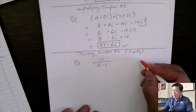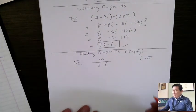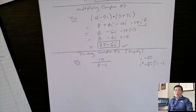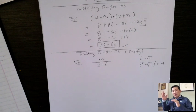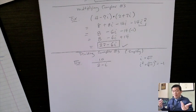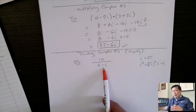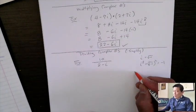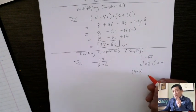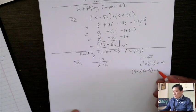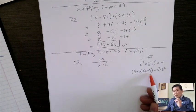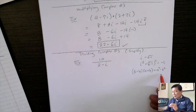We know that i is the square root of negative 1, and if i gets squared, that gives negative 1. So if we can produce an i squared in the denominator, we turn the imaginary number into a real number. We recall that if you have a minus b and multiply by a plus b, you get a squared minus b squared.